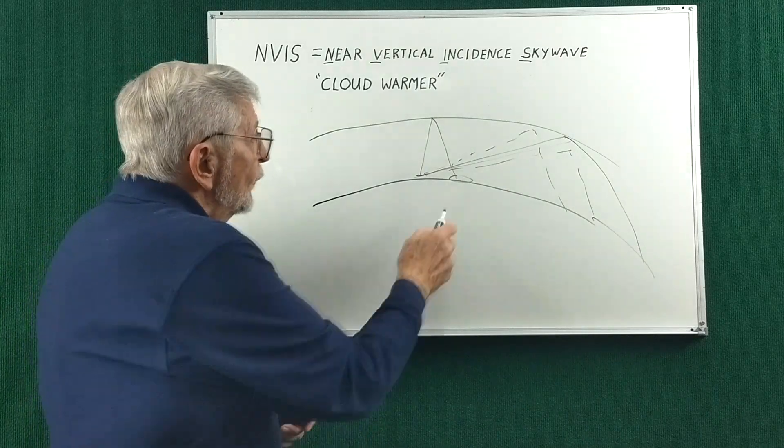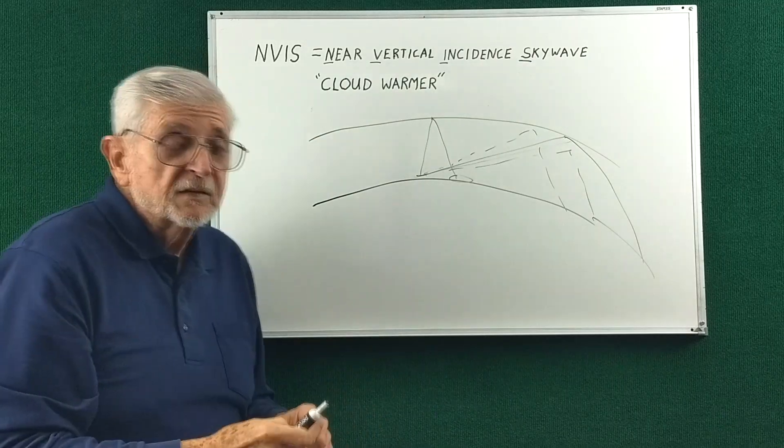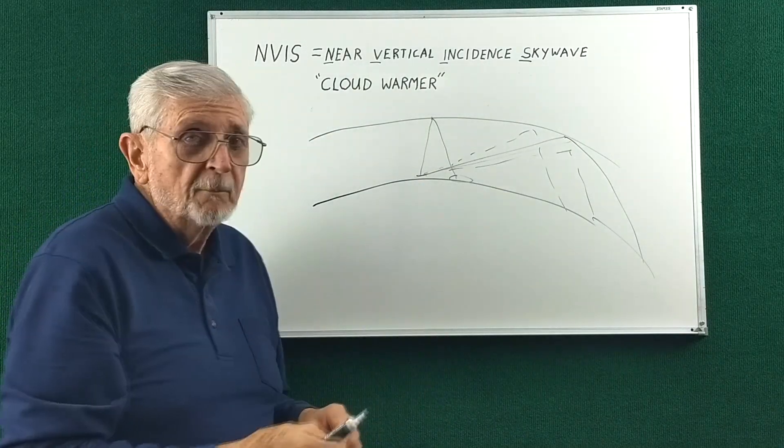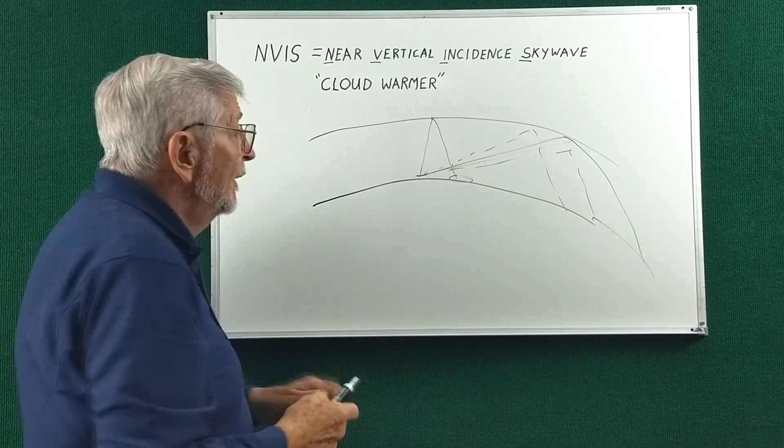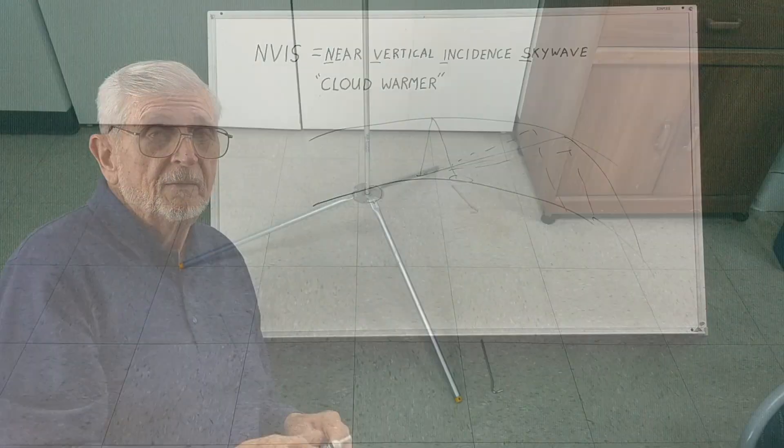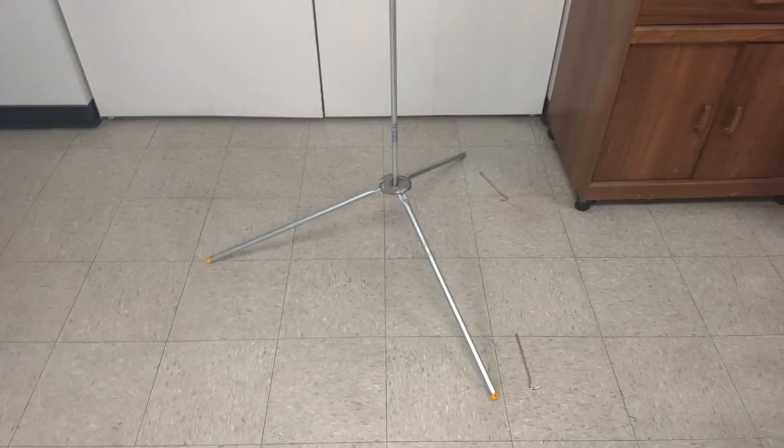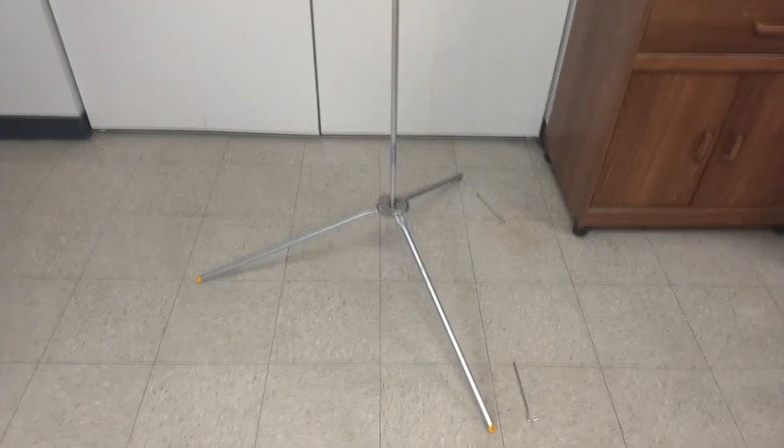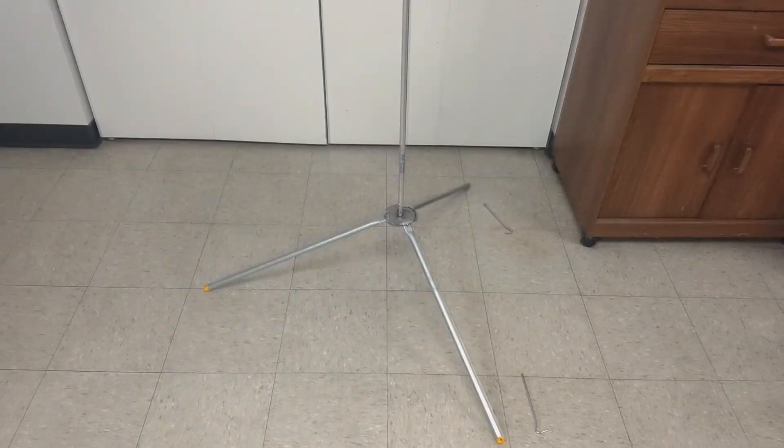For the POTA antenna, to make it an NVIS, we need to figure out what angle we can bend the antenna over. And then we can model it and see how it's going to work. My POTA antenna is the Amritech tripod base and the Easy Stinger vertical whip.